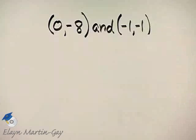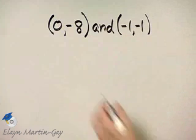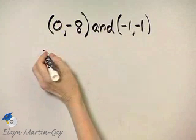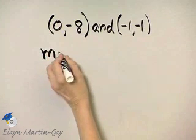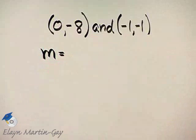Let's find the slope of the line that passes through these two points. Remember, let's use the slope formula. M, standing for slope, is equal to y minus y over x minus x.